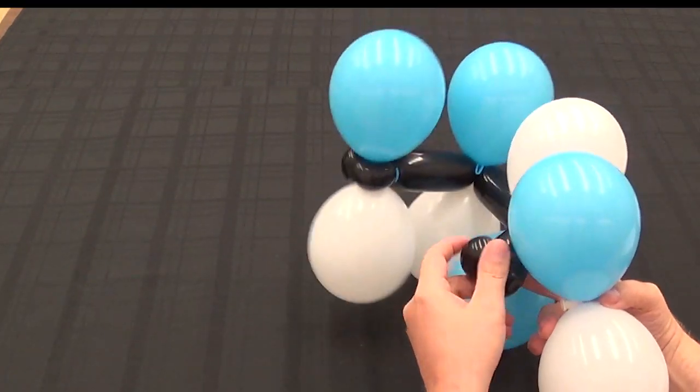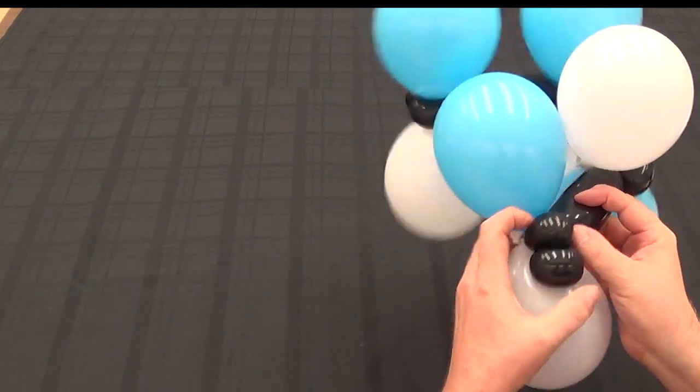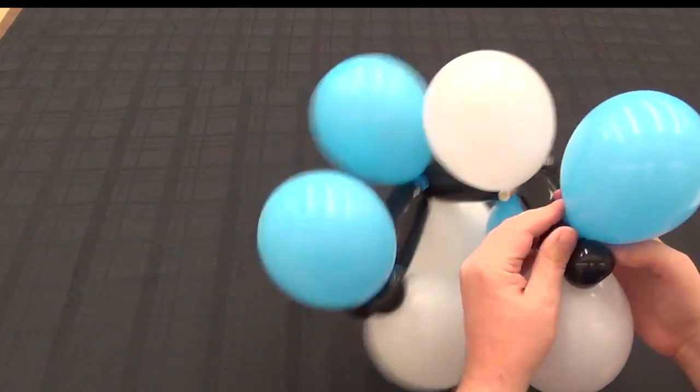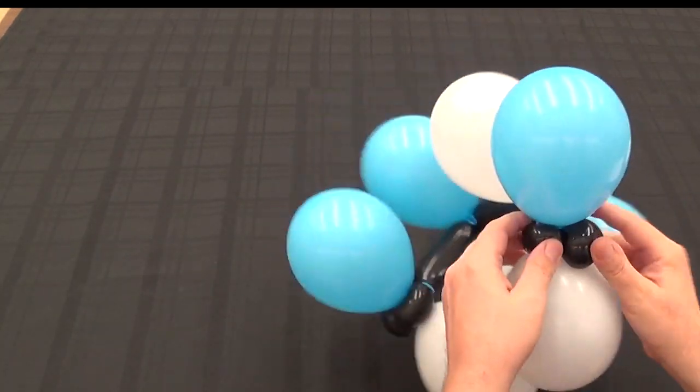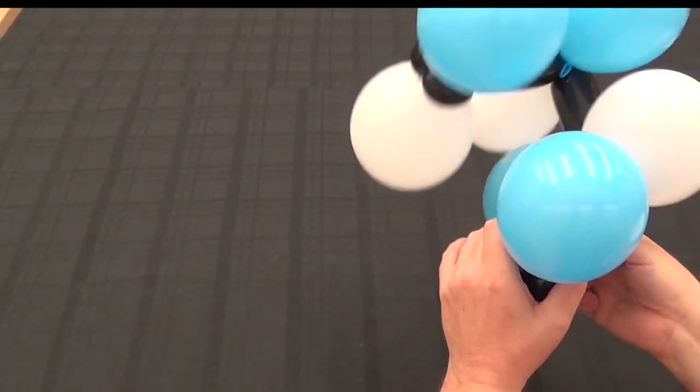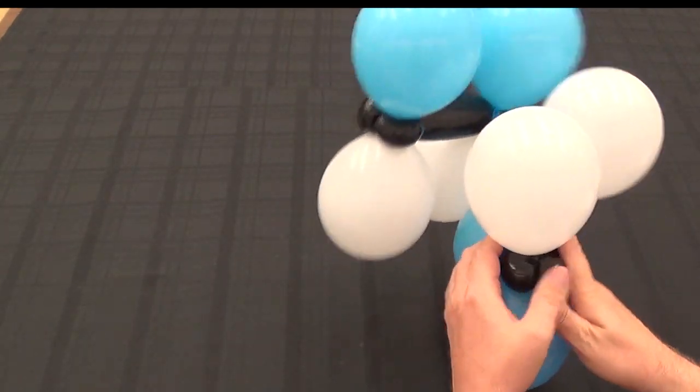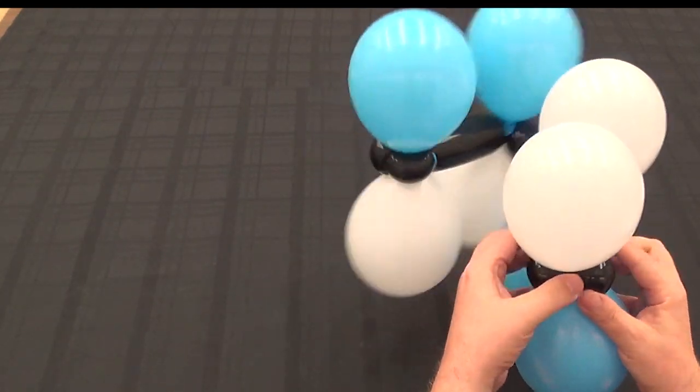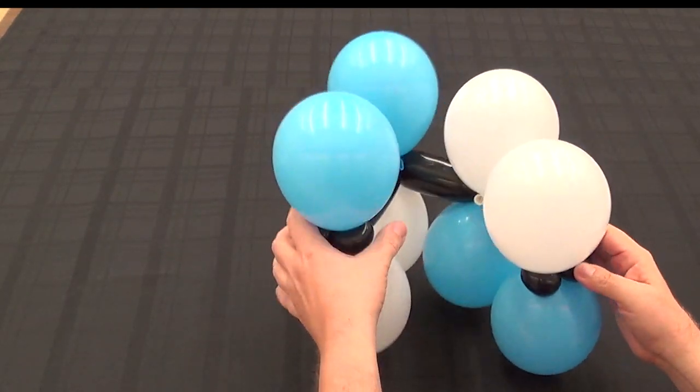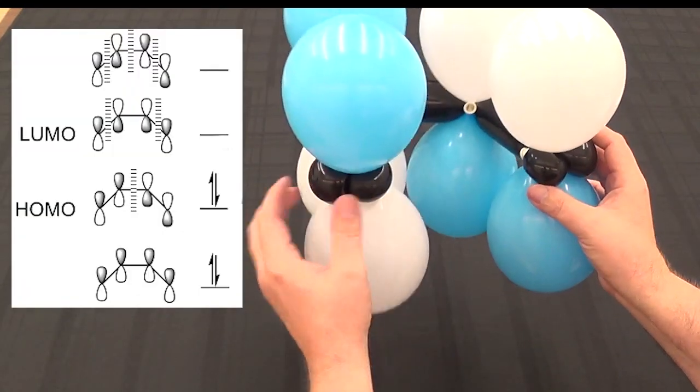And again, we're going to insert that here, and as we insert it, we'll twist these horizontally. It helps stabilize that balloon, so it locks that one in. Oops, as you can see, I made a mistake. This one. And now we have the highest occupied molecular orbital for butadiene.